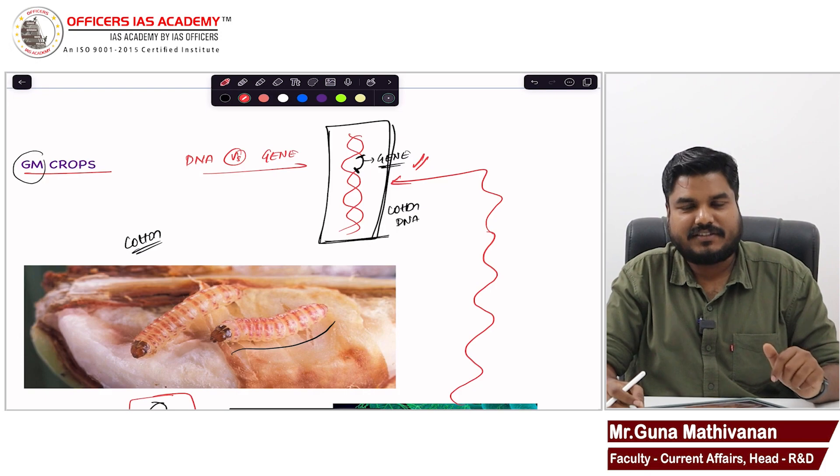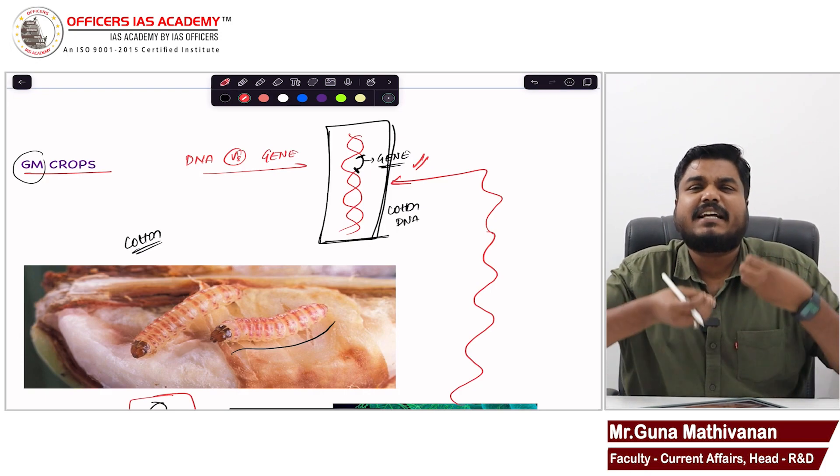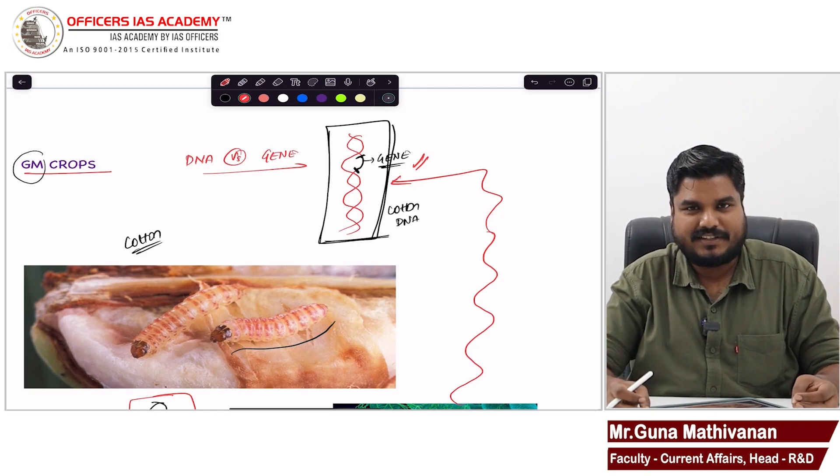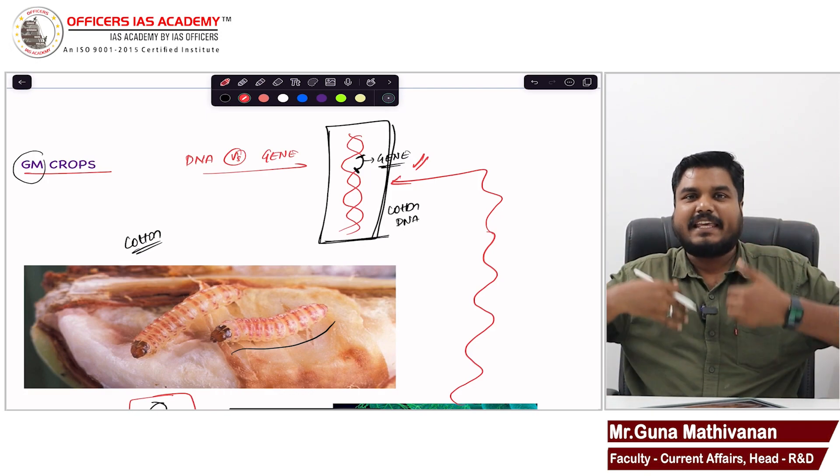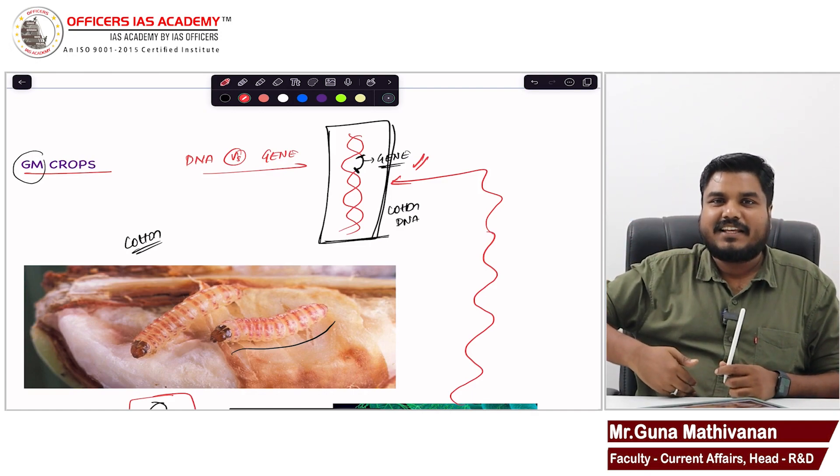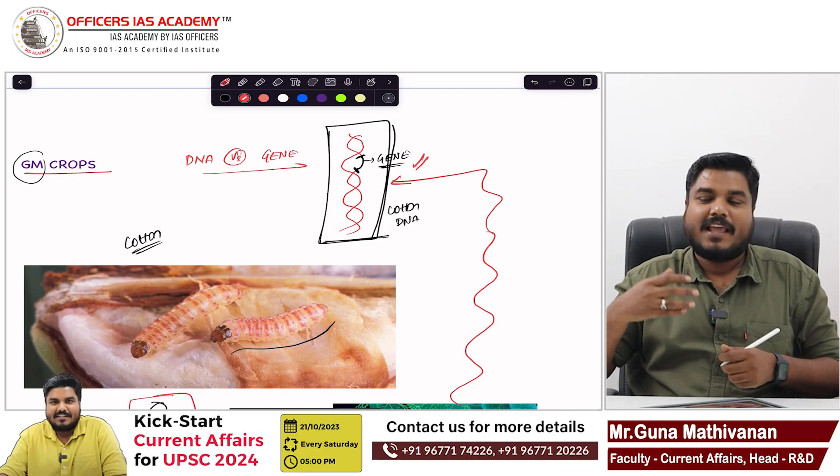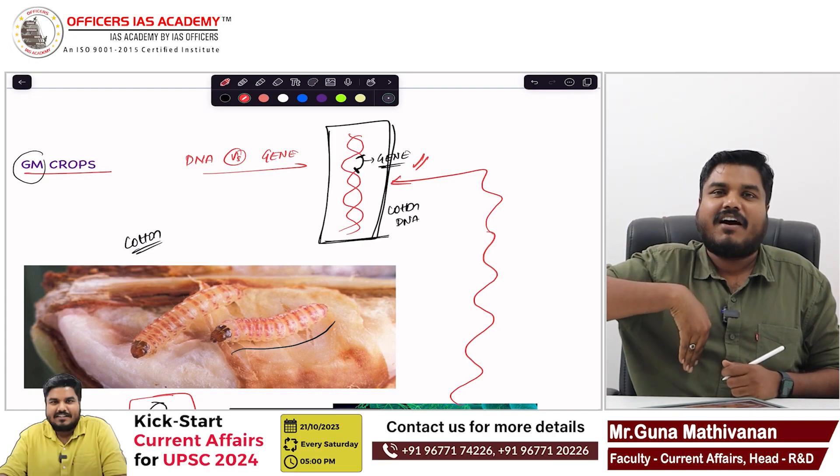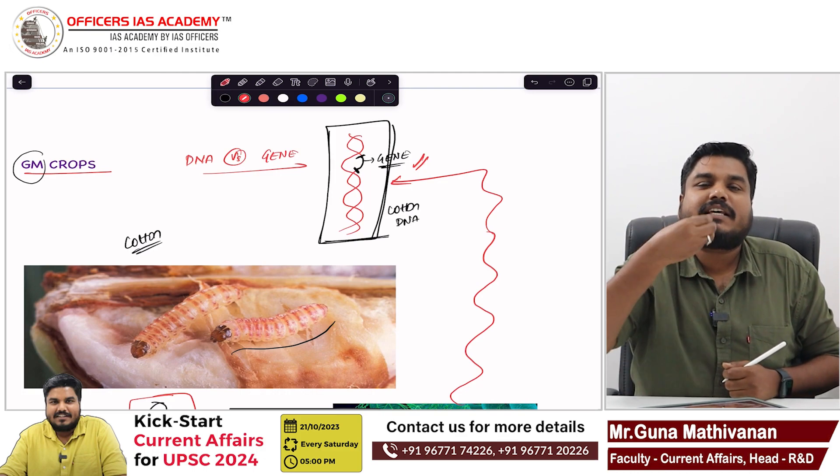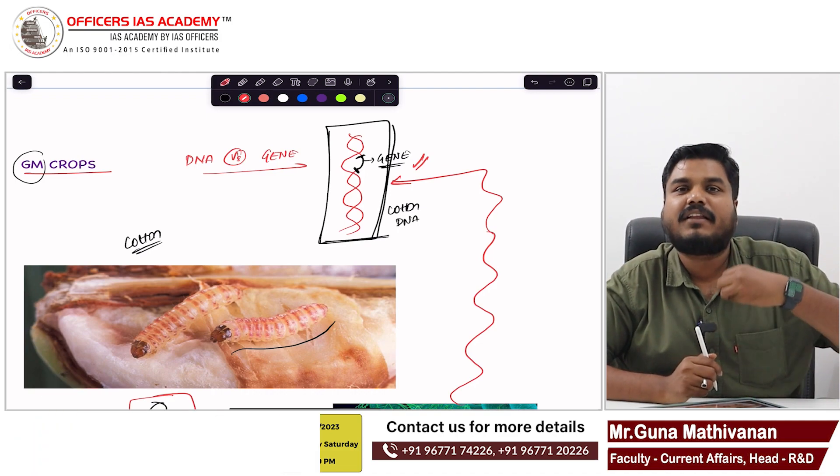So now what happened? This bacteria's characteristics now entered into the cotton characteristics. We took one particular gene of that bacteria, we added it to the cotton. By adding this, we were adding the characteristics of that bacteria to that cotton. What is that characteristic? That characteristic makes the cotton secrete some poison, some toxic substance.